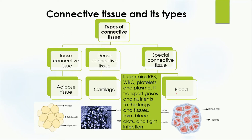Another example of special connective tissue is blood. Blood is made up of red blood cells, white blood cells, platelets, and plasma. The main purpose of blood is to transport gases — oxygen and carbon dioxide — along with nutrients to the lungs and other tissues of the body. Blood also forms clots to prevent the loss of blood; without clotting, blood loss could cause death. Additionally, blood helps fight infection — if bacteria or a pathogen enters the body, white blood cells attack and destroy it, protecting the body from harmful pathogens.